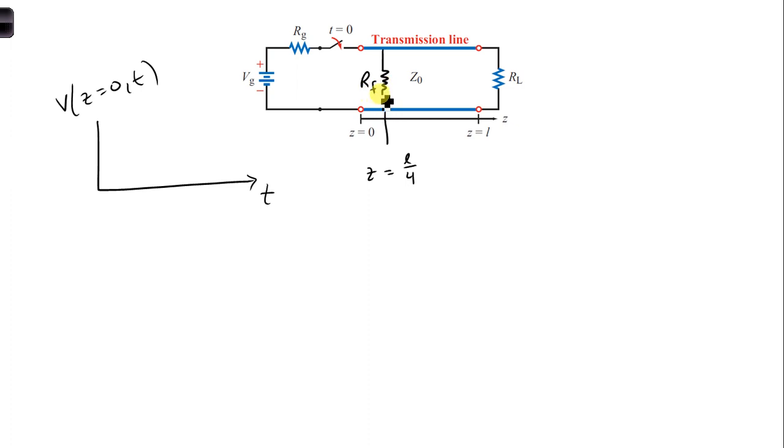Rf is in parallel with Z naught. And so, in order to calculate the total reflection, we need the reflection coefficient for Rllf, which is the reflection coefficient for the Rf resistor in parallel with Z naught. So first we have to calculate Rlf,